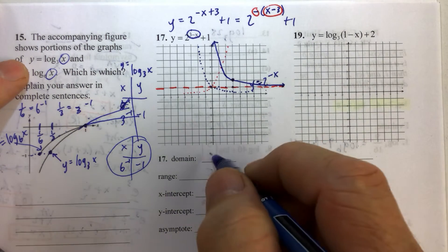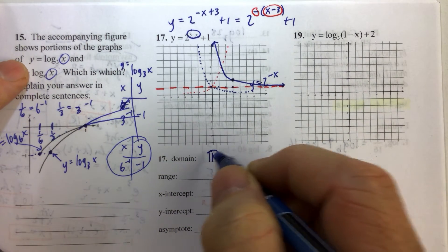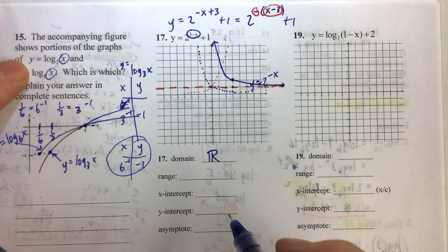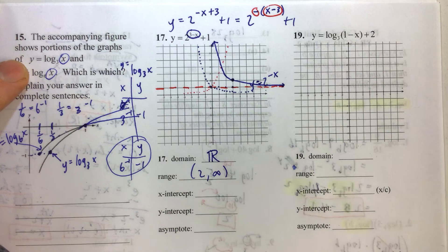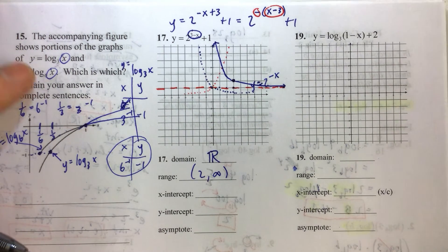The domain of every exponential function is all real numbers. The range of this function then would be from 2 to infinity, not including 2 because of the asymptote. The y coordinates never hit 2, they're always just above 2.